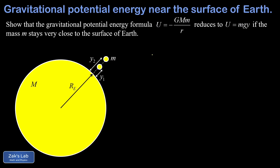Now we get into the main part of the derivation. We're trying to find the potential energy function in the approximation that our mass stays very close to the surface of the earth, starting from the general expression for the potential energy between two point masses. We look at the process of lifting little m from an initial height y1 above the surface to a final height y2, examining the change in potential energy. We'll infer an expression for the gravitational potential energy at height y from that change.